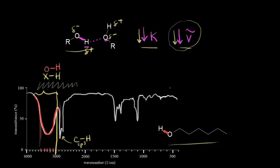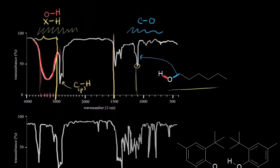So you know immediately to think about the possibility of an alcohol functional group in your molecule. We can also draw a line at 1,500, and somewhere around 1,100 wave numbers this signal is actually the carbon-oxygen single bond — that's in the single bond region. So that's what the typical IR spectrum for an alcohol looks like. Look for that broad signal for the O-H stretch.